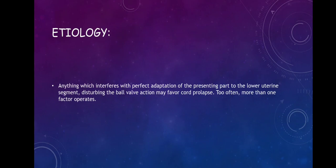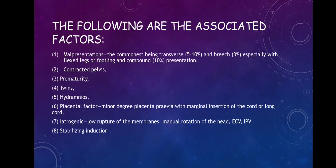The etiology of cord prolapse is usually anything which interferes with perfect adaptation of the presenting part to the lower uterine segment. This disturbing valve action may favour cord prolapse, and often more than one factor operates. The associated factors include: number 1, small presentations — the commonest being transverse at 5 to 10%, breech at 3%, especially with flexed legs or footling, and compound presentation at 10%.